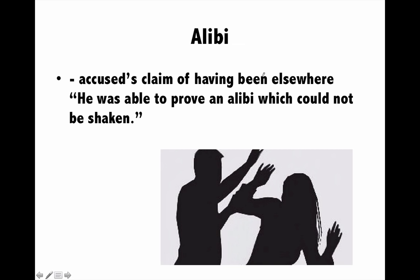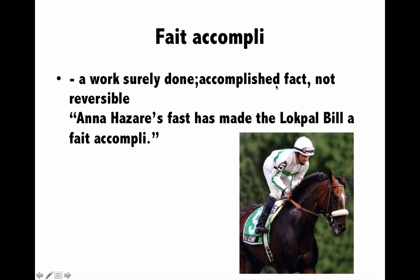Next is 'alibi'. For example, if there is a murder and police suspect me, I will tell the police that when the murder was done I was with my friend — you can ask my friend. So my friend is an alibi. Alibi means an accused's claim of having been elsewhere. It basically means when you have a person, place, or occasion that proves your presence elsewhere at the time something was done.